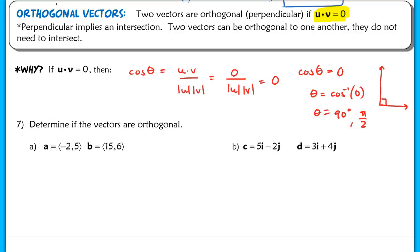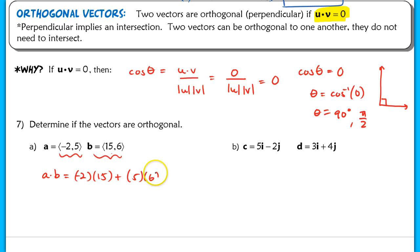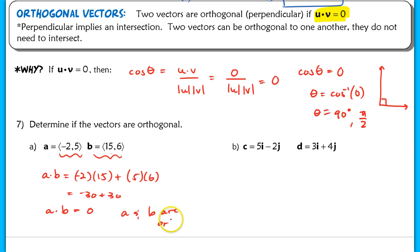Example 7, question A: decide if the vectors are orthogonal. Using the algebraic definition: A·B = (-2)(15) + (5)(6) = -30 + 30 = 0. Since the dot product A·B equals 0, vectors A and B are orthogonal.